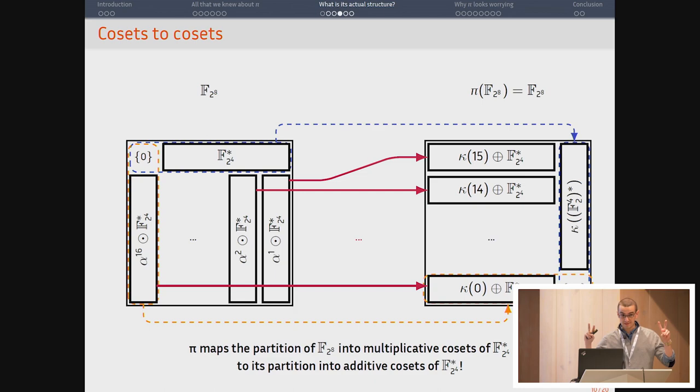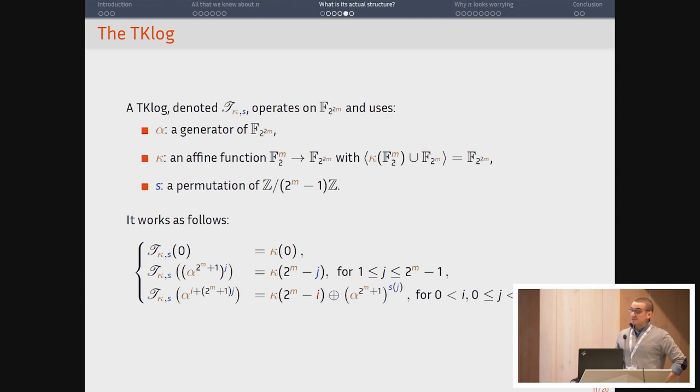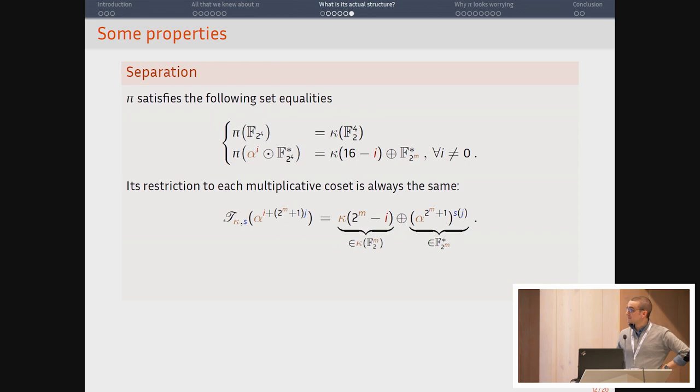A random S-Box does not do this. Actually, you can write it in this way. So that's what I call the TK log because the designers of Kuznetschik are the TK 26. And it's kind of a logarithm. So you need an affine function and a small permutation of the exponents of the subfield and the generator. And then it works like this. I'm not going to go into too much details. It maps it always. So such permutations and pi in particular always satisfy some set equalities, namely these.